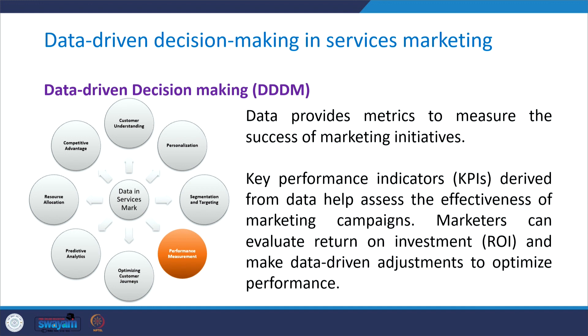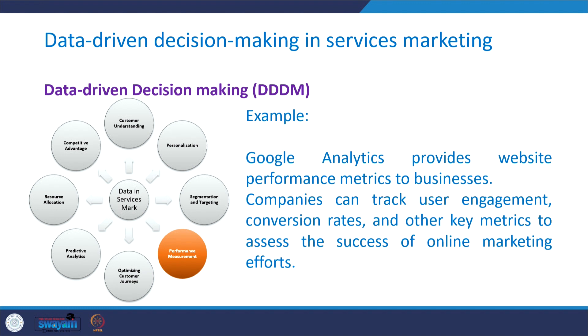Next, data provides metrics to measure the success of marketing initiatives. Key performance indicators, known as KPIs, derived from data help assess the effectiveness of marketing campaigns. Marketers can evaluate return on investment (ROI) and make data-driven adjustments to optimize campaign performance. For example, Google Analytics provides website performance metrics to businesses. Companies can track user engagement, conversion rates, and other key metrics to assess the success of online marketing efforts.